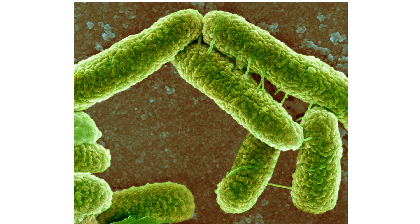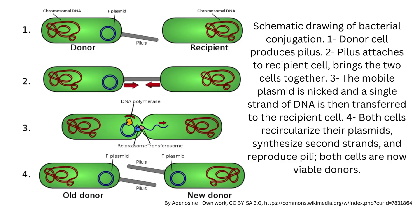Bacteria lack traditional sexual reproduction and mitosis. However, some bacteria transfer genetic material from a donor bacterium to a recipient during a process called conjugation. Some conjugating bacteria use specialized sex pili to transfer genetic material. Conjugation produces new genetic combinations that may allow the resulting bacteria to survive under a great variety of conditions.